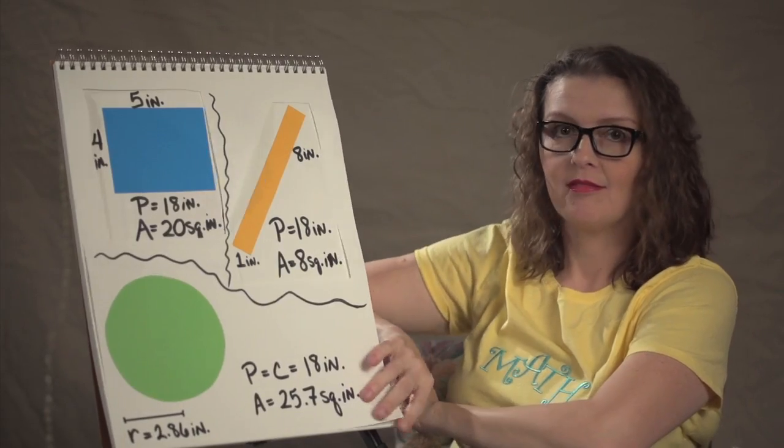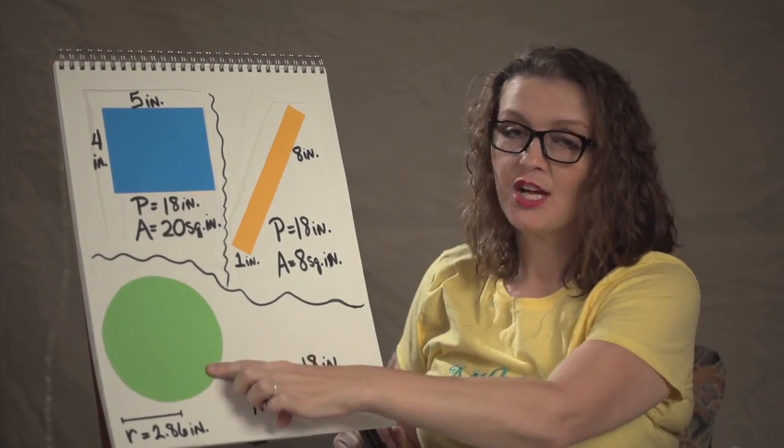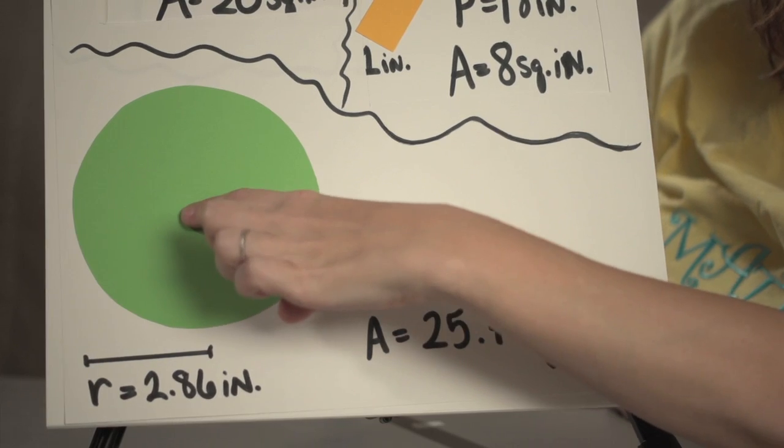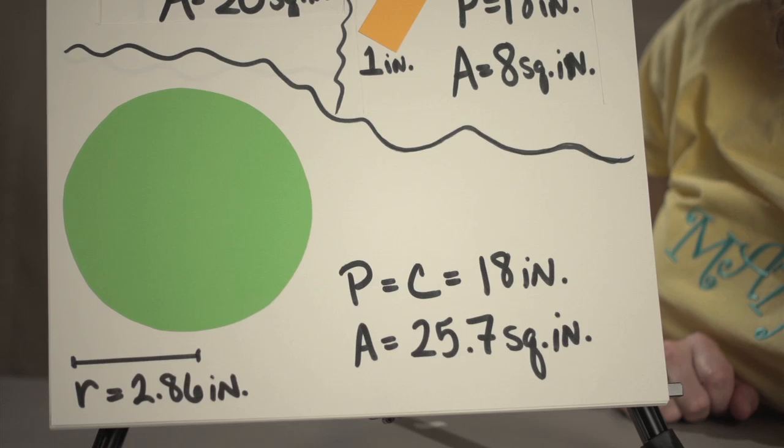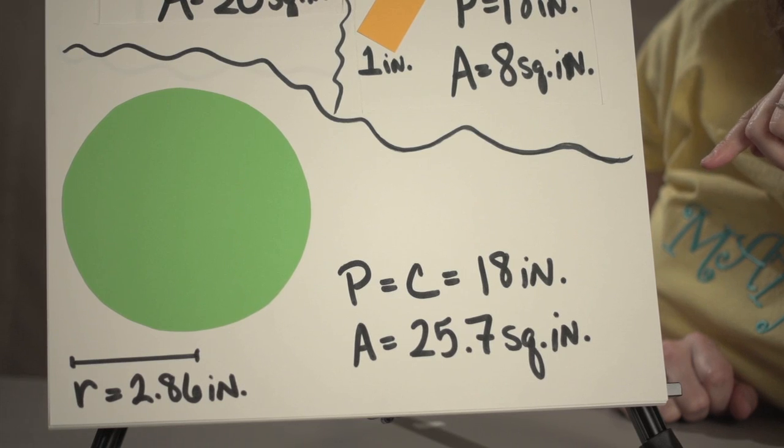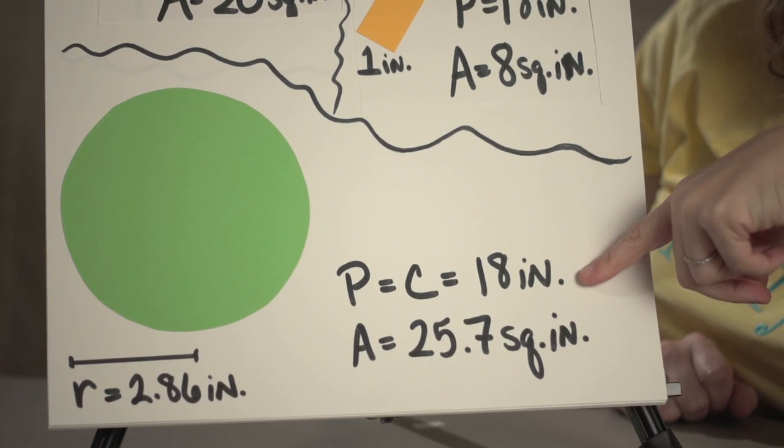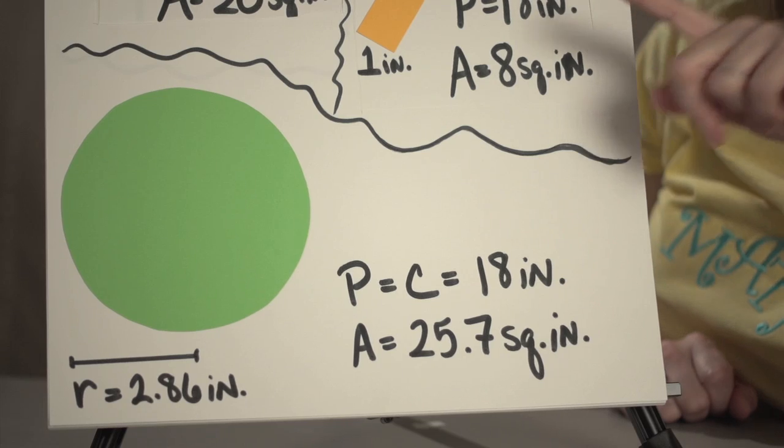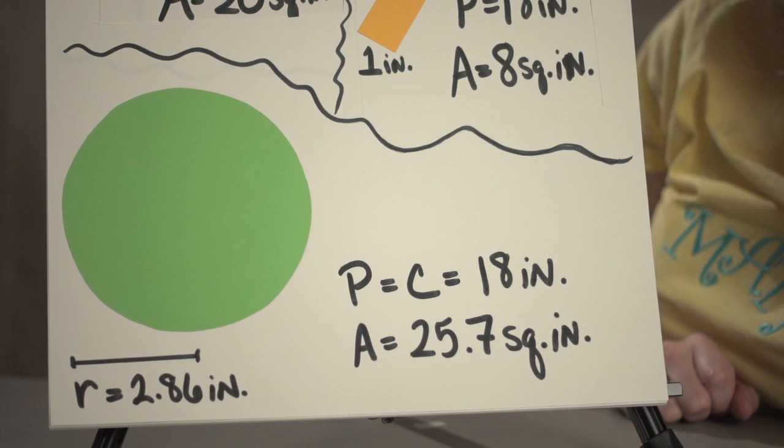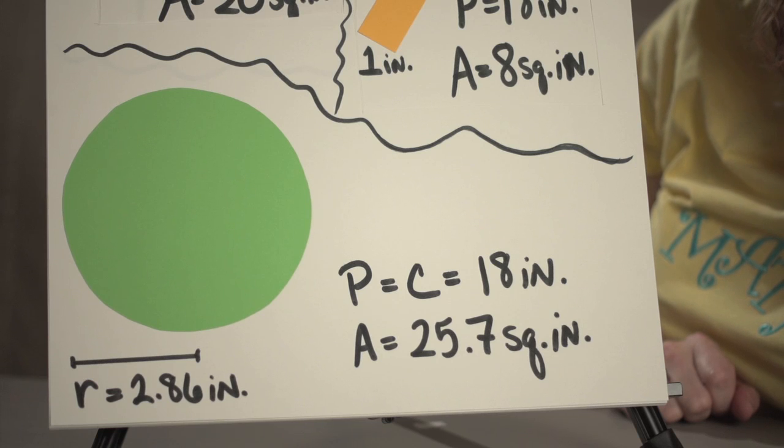Consider now a circle. A circle's perimeter is also called the circumference. This circle has radius of 2.86 inches. Its circumference, or perimeter, is 18 inches, just like the other two rectangles. And the area is 25.7 square inches.